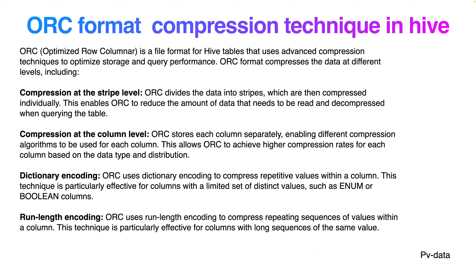For compression at the column level: you can compress a particular column individually, enabling different compression algorithms to be used for each column. This allows ORC to achieve higher compression rates for each column based on data type and distribution. ORC uses dictionary encoding to compress repetitive values within a column. This technique is particularly efficient for columns with a limited set of distinct values, such as ENUM or BOOLEAN columns — for example, a country column with many repeated country values.